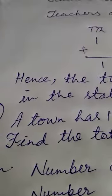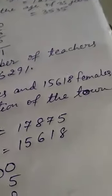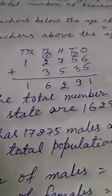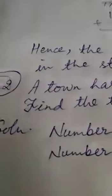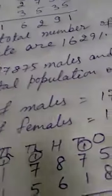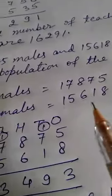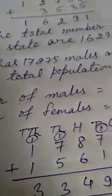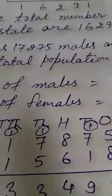Now the second question: a town has 17,875 males and 15,618 females. Find the total population of the town. When you add the total number of males and the total number of females, you will get the total population. So first, write in the solution: number of males equals 17,875 and number of females equals 15,618. Now you will arrange the numbers into columns: 10,000 place, 1,000 place, 100 place, 10s place, and 1s place.